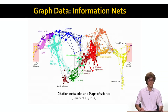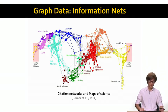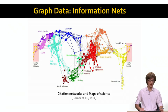Another set of data that can naturally be represented as networks are networks of information. For example, here is a map of science where every node is a different journal or conference, and the edges between these journals mean that one journal is citing the other. Based on this citation network between journals, we can visualize how different disciplines and subfields of science relate to each other.